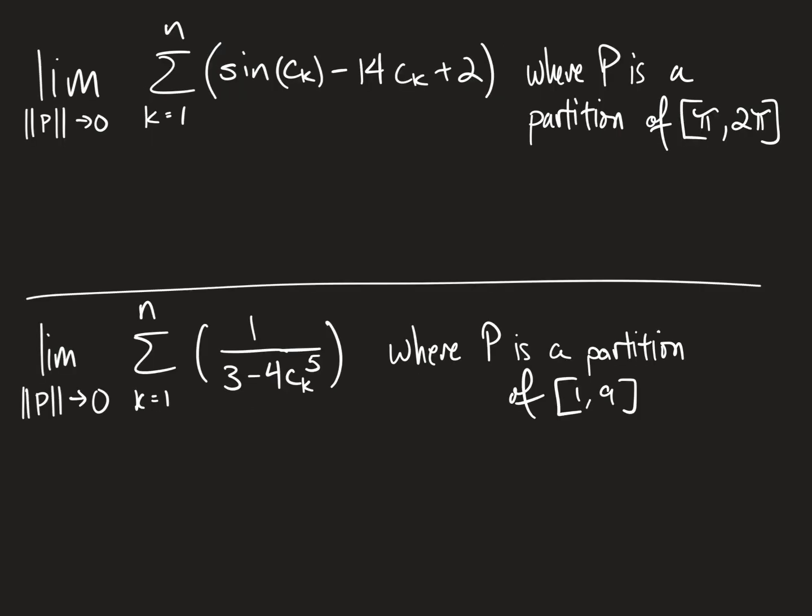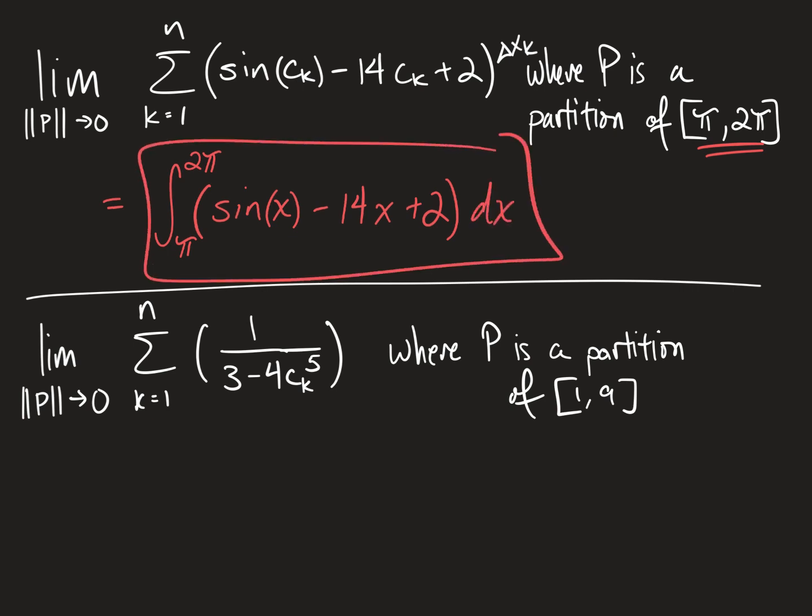Alright, top example here. We have the limit as the partition p approaches 0, of the sum as k ranges from 1 to n of sine of c sub k minus 14 c sub k plus 2, where p is a partition of pi to 2 pi. So to turn this into a definite integral, you need to first write your integration sign. Use that closed interval there. The first number will go into the bottom, the second number will go into the top of the integral. From there, all you have to do is replace all of the c sub k's with x's. And I realize I'm forgetting the delta x sub k over here. And then you just replace the delta x sub k with dx. There's your definite integral.